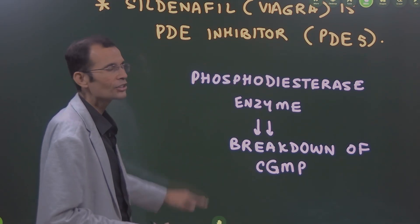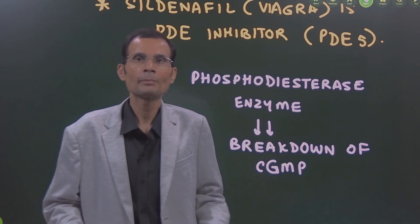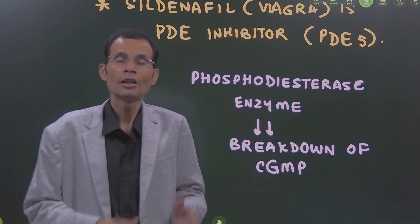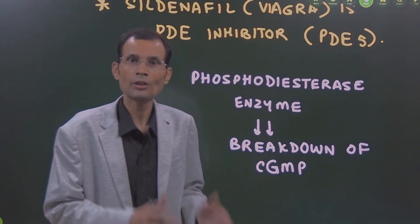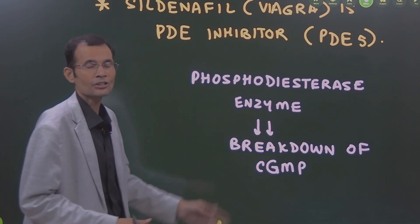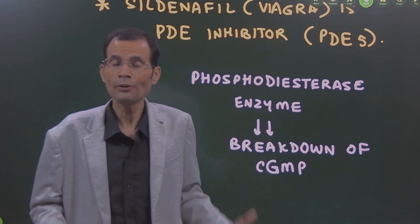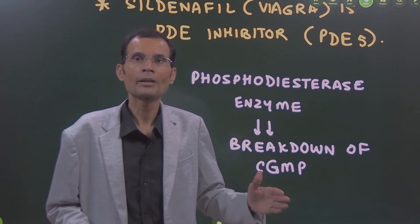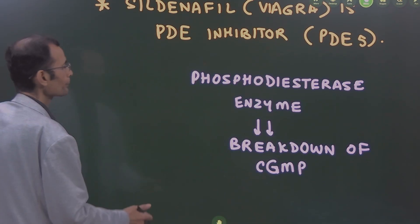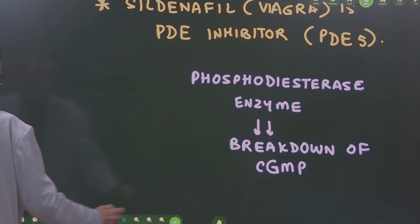Cyclic GMP is a second messenger for nitric oxide, which is a potent vasodilator. The vasodilator action will be pronounced, and that is where this drug is primarily prescribed. That's the mechanism of action of Sildenafil.